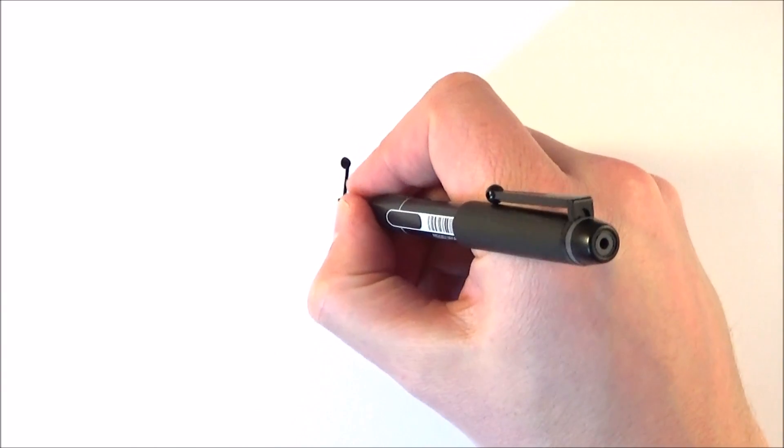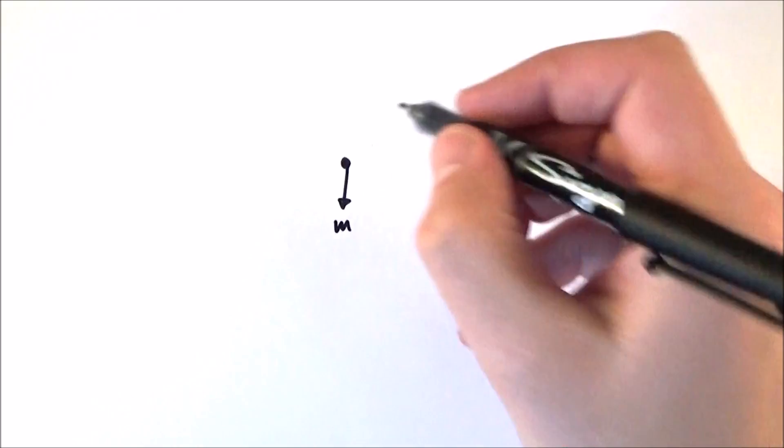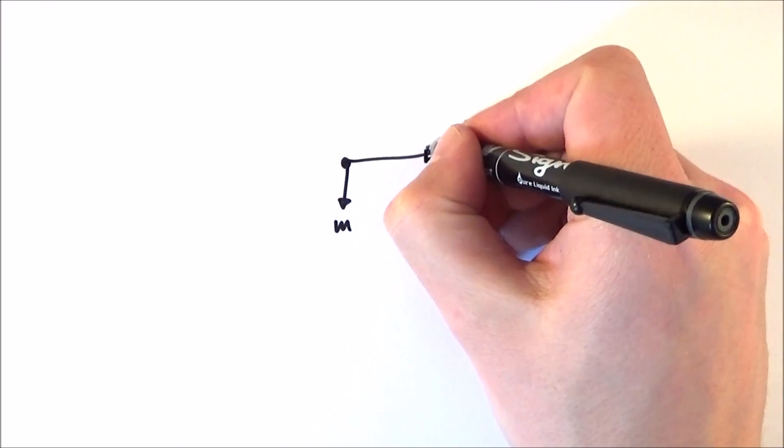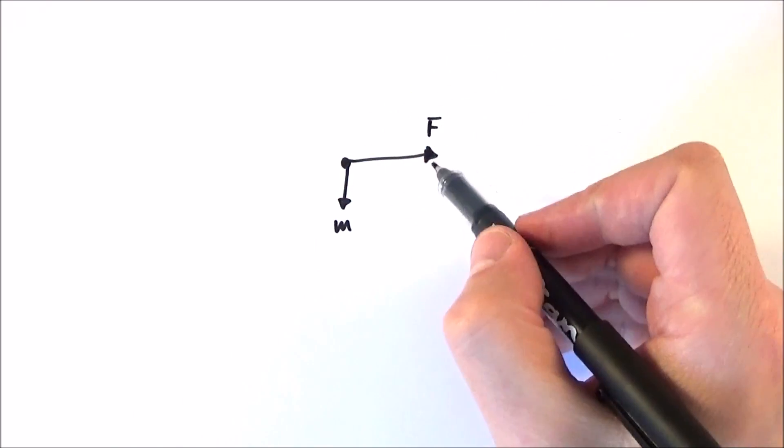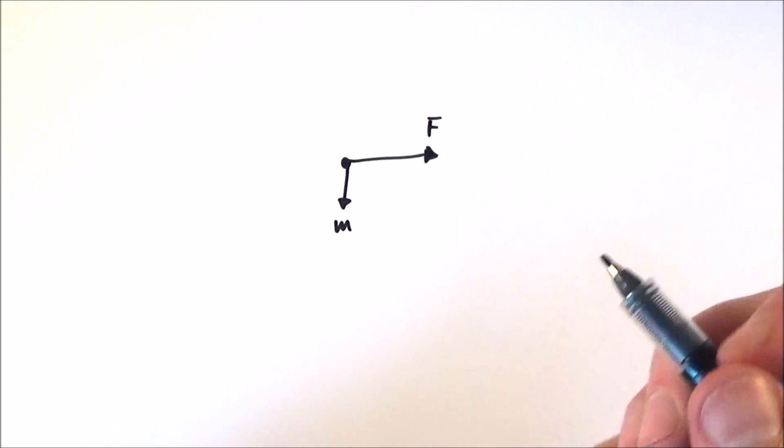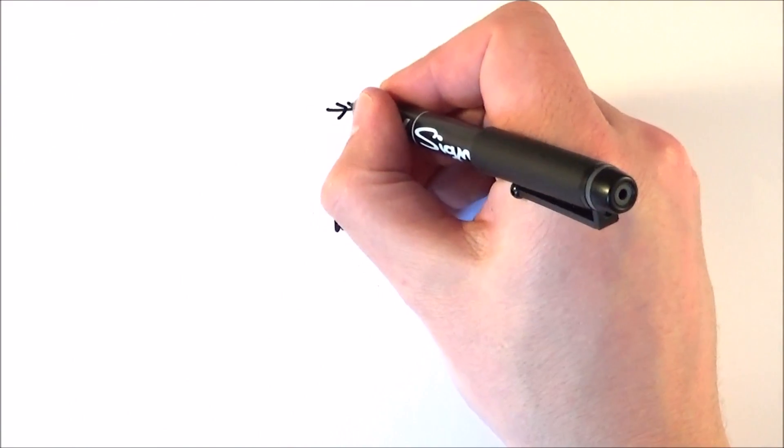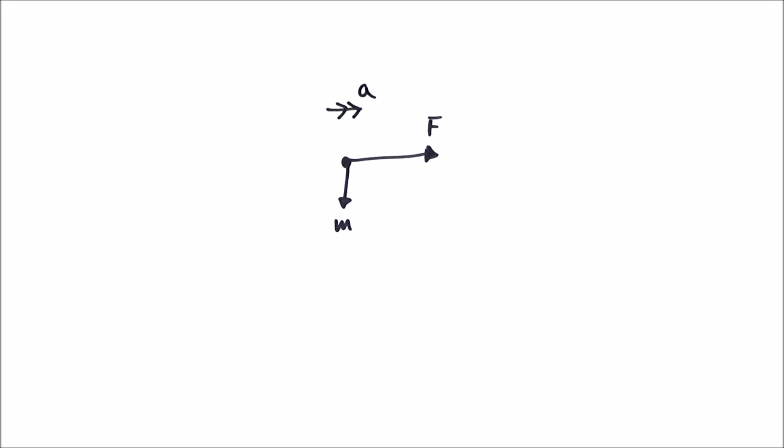Imagine we have an object. It could be absolutely anything and this object has a certain mass. We can apply a force to this object. Now if you apply a force to an object and there's a net force, then the object will tend to get faster and it will accelerate.